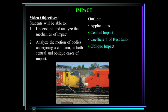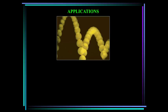We'll cover some applications, define central impact, coefficient of restitution, and oblique impact. The quality of a tennis ball is measured by the height of its bounce, and we quantify that by something called the coefficient of restitution, which we'll go over in detail in this lecture.